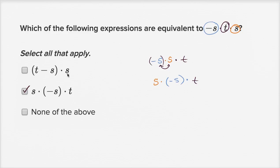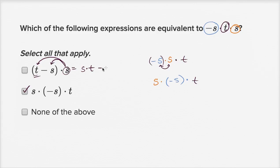Now let's make sure the other choice does not apply. The best way I can think about that is by distributing this s. If I distribute the s, I get s times t, which is st, minus s times s, which is minus s squared. But this is very different — the original expression is just taking the product of three variables as one term, whereas here I have two different terms. So this is not the same thing.